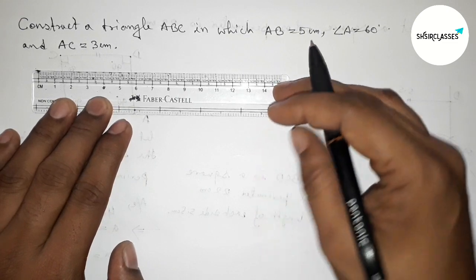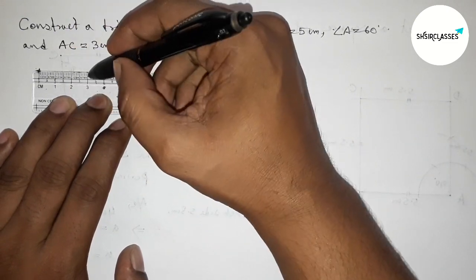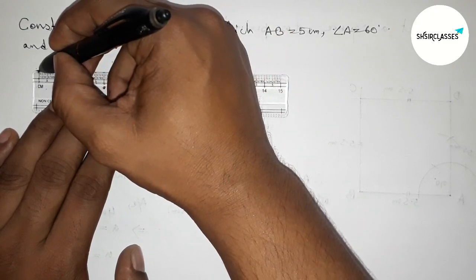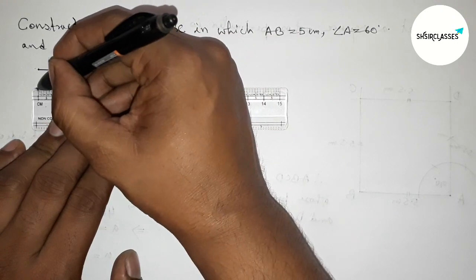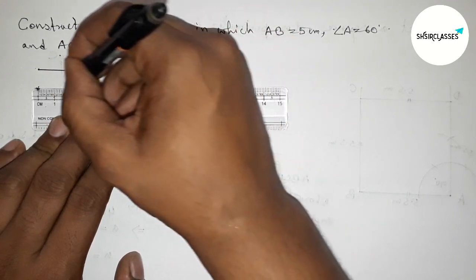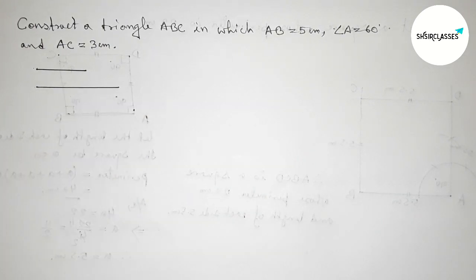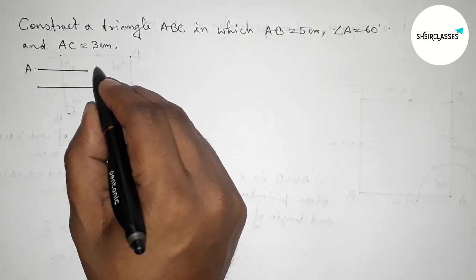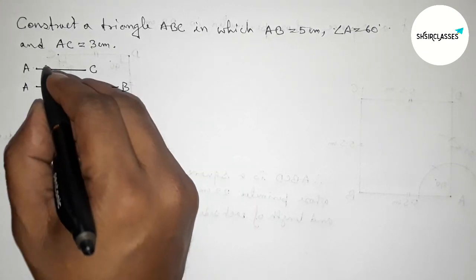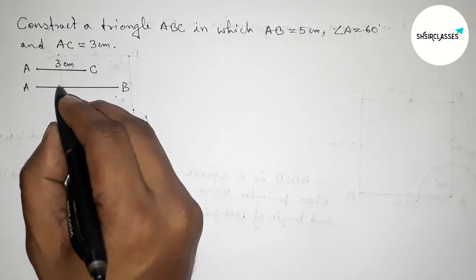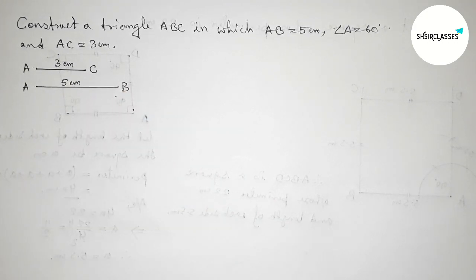First, let us draw the two given sides. Drawing a 3 centimeter line — this is the 3 centimeter line — and drawing a 5 centimeter line. This one is the AC line and this one is the AB line, so AC is 3 centimeters and AB is 5 centimeters.